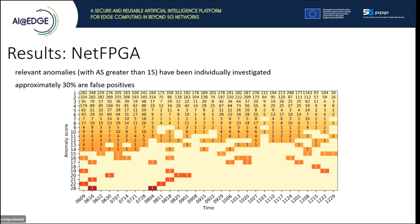To summarize the results: the dataset used was the MAWI Archive 2006 dataset. The different anomalies were calculated with the split-in-merge algorithm, and we set the threshold to everything with an anomaly score greater than 15 should be considered an anomaly. We then manually investigated these anomalies and found that the false positive rate is 30%.